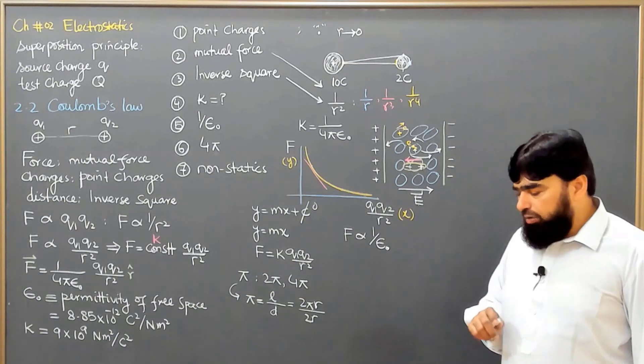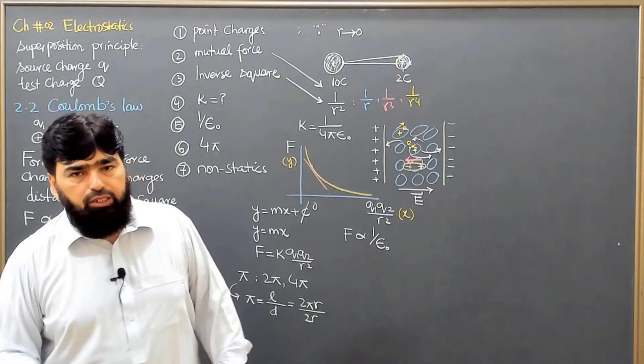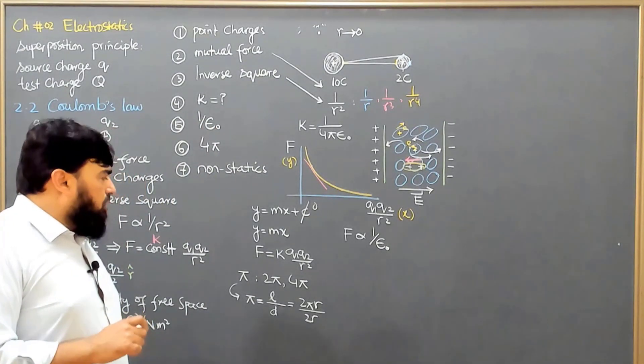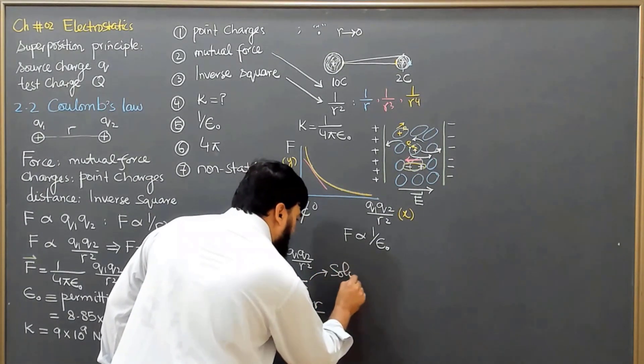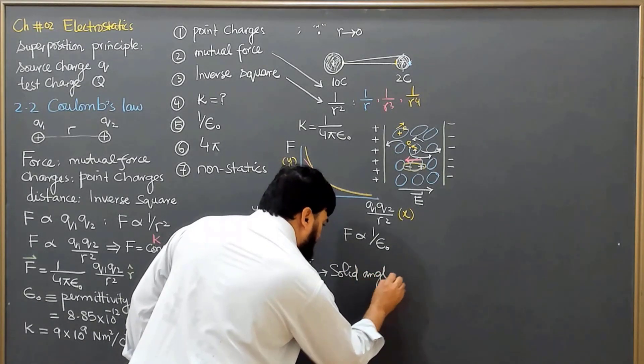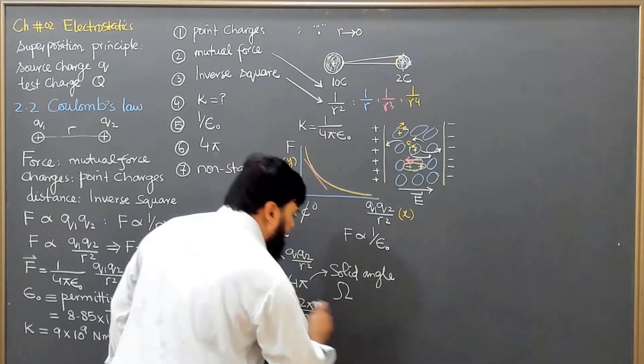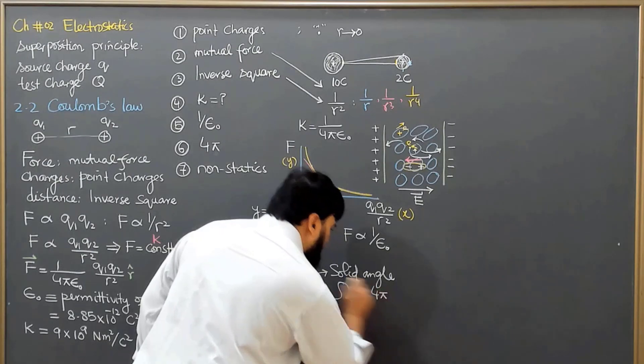And 4π we know that this is not the planar angle but this is the 3-dimensional angle which we call solid angle. Solid angle is a 3-dimensional angle and we denote this by omega, the capital omega or big omega, and this is equal to 4π.